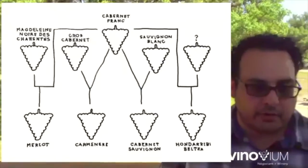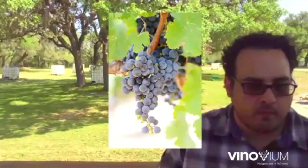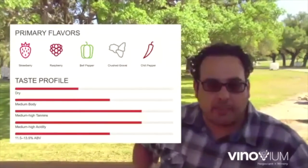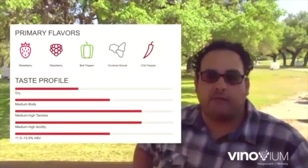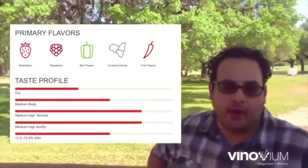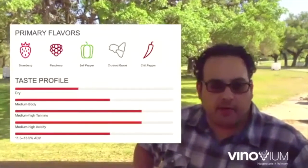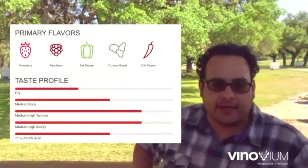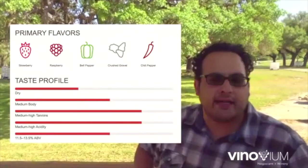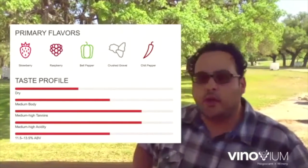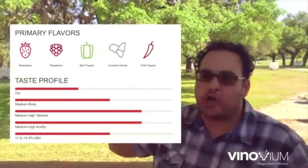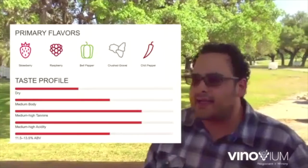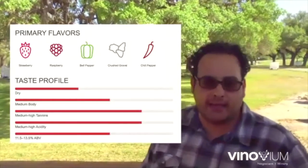Wine Folly describes Cabernet Franc as having strawberry, raspberry, bell pepper, crushed gravel, and chili pepper character depending on where you are. The wine is dry, listed as medium-bodied with medium-to-high tannin, medium-high acid, and not really high in alcohol. I don't necessarily agree so much with the high tannin — like the Chinon we had, it's super light in tannin, not very grippy at all. While the tannin is noticeable, it's not shocking — it doesn't make your gums stick to your teeth or give you cat tongue.